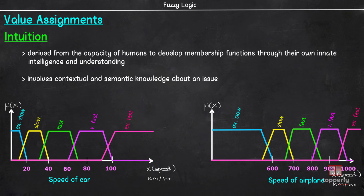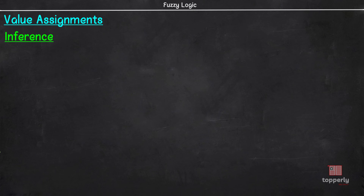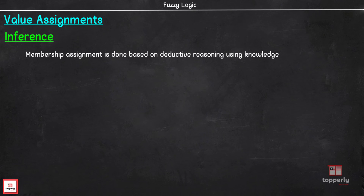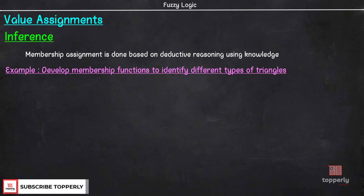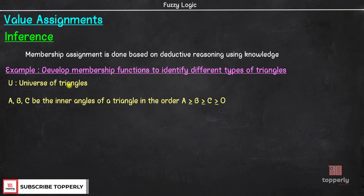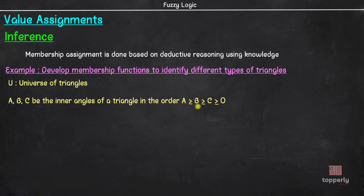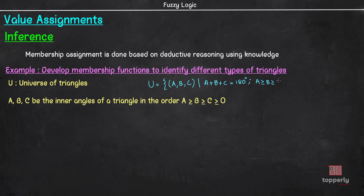Now the next method for membership value assignment is inference. In this method, we use knowledge to perform deductive reasoning. To consider an example, let us try to develop membership values to identify different triangles. Let U be the universe of triangles and let A, B, C be the inner angles of the triangles in the order: angle A ≥ angle B ≥ angle C ≥ 0. So we have a universe U with angles A, B, and C forming the inner angles of a triangle, where A + B + C = 180°.